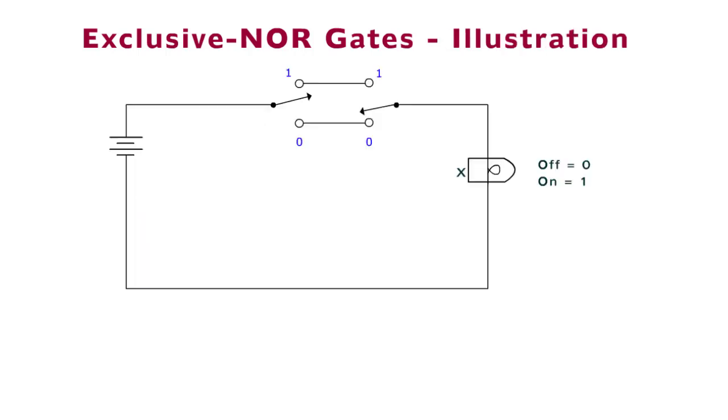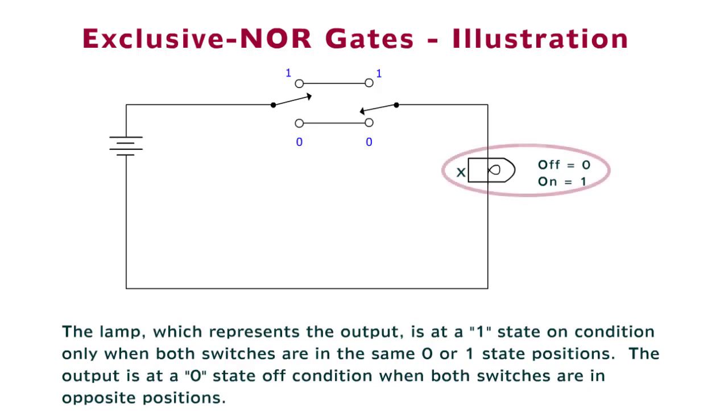The circuit can be used to illustrate the operation of the X-NOR gate. The lamp, which represents the output, is at a 1 state ON condition only when both switches are in the same 0 or 1 state positions. The output is at a 0 state OFF condition when both switches are in opposite positions.